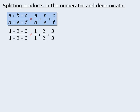Notice that the left-hand side here simplifies to be 6 over 6, or 1, and the right-hand side simplifies to be 1 plus 1 plus 1, which is 3.